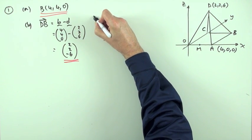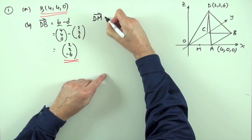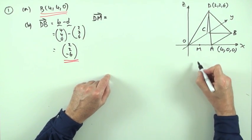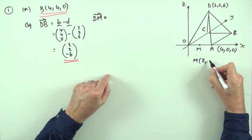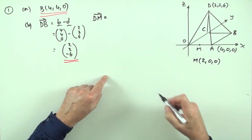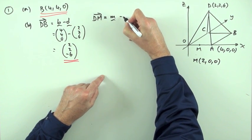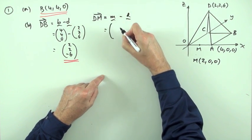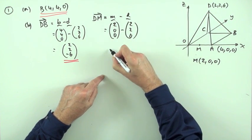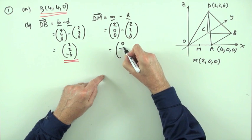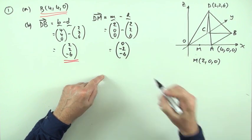The second part said, what's DM? Well, for this, I need to know what M is. So I'll put a wee note here at the side. If M's the midpoint, that means it's halfway to A, so it's only two along, but still nothing back and nothing up. So that'd be M minus D. So that's going to be two, zero, zero, minus D again, which is two, two, six. So that's going to give me zero, negative two, negative six.